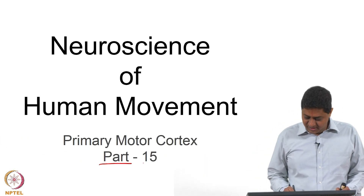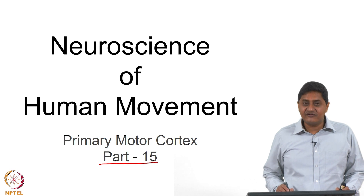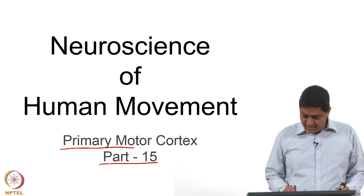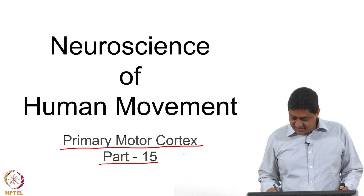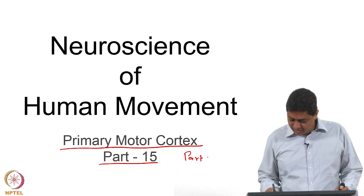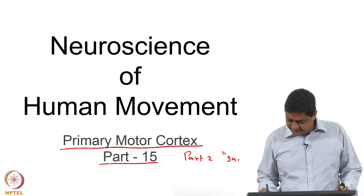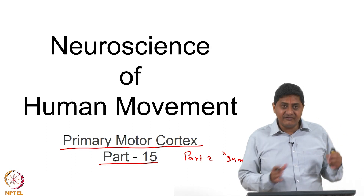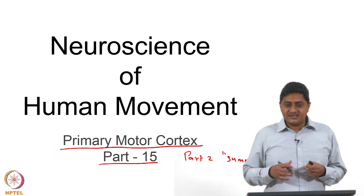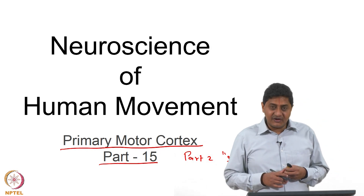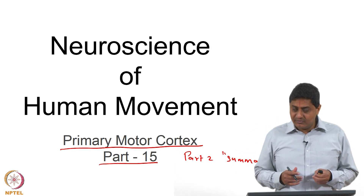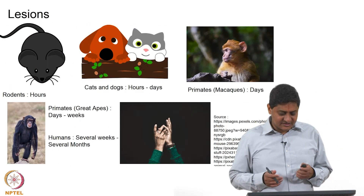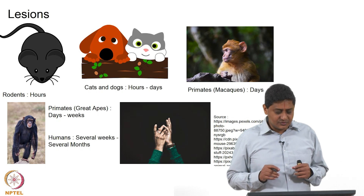Welcome to this class on neuroscience of human movement. This is part 15 of our discussion on primary motor cortex and is the last lecture on this topic. This is also part 2 of the summary on primary motor cortex. We have discussed the various works in primary motor cortex, including lesions and brain-machine interfaces in the previous classes, which I am going to summarize in today's class.